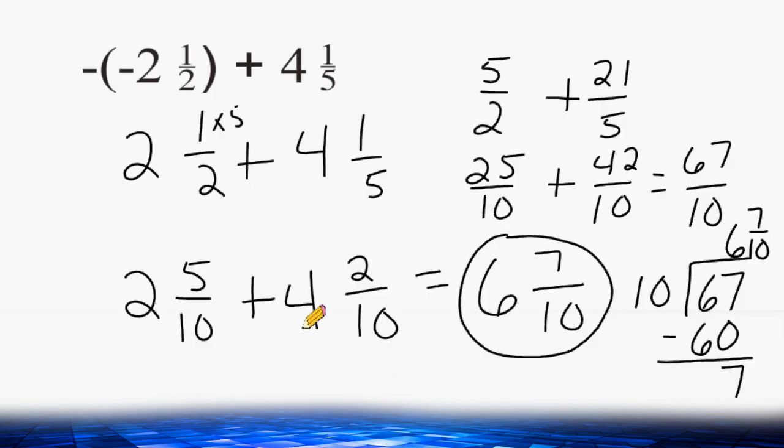Sometimes it's easier not to take the numbers and rename them as improper fractions. And usually that's the case if the two fractional parts of the mixed numbers have a sum that's less than 1 whole. But if the two fractions have a sum that's greater than 1 whole, usually it's a better idea to rename your mixed numbers as improper fractions and then add. But I showed both methods just so you can see there's two different ways to solve this problem.